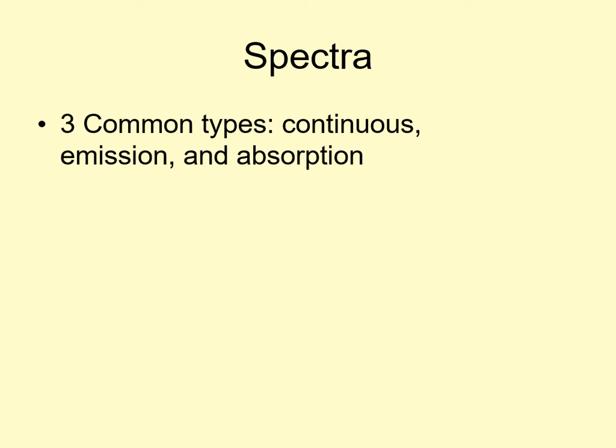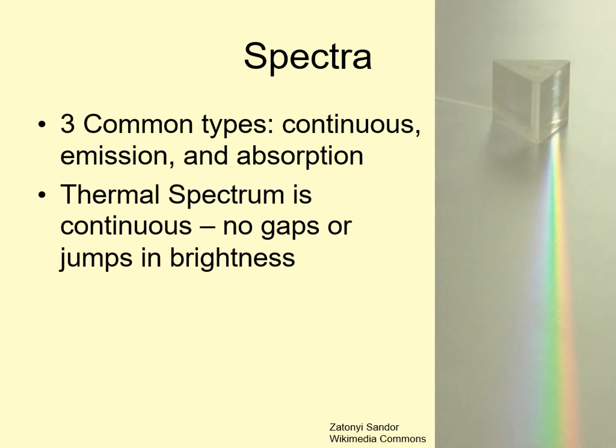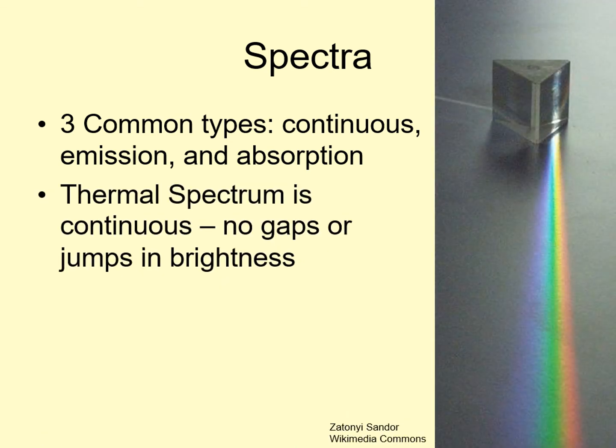Now that we've looked at thermal radiation, it's time to put that into a larger context by discussing different kinds of spectra. We usually divide spectra up into three main types: continuous, emission, and absorption. A continuous spectrum is one that goes through a series of colors with no gaps or jumps. Thermal radiation is the most common example of a continuous spectrum.